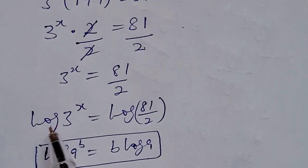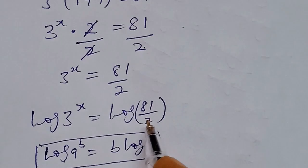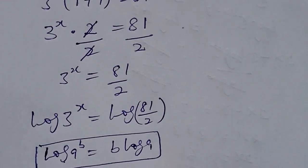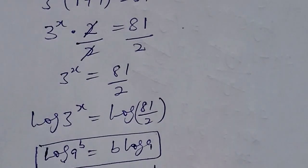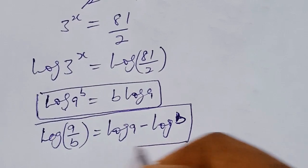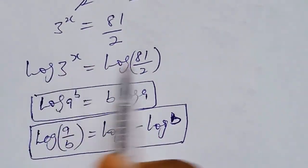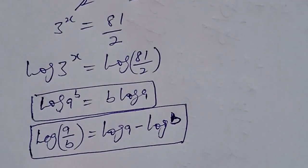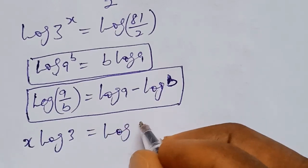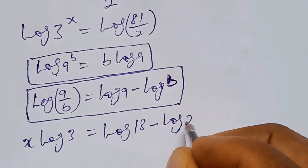We use this identity on the left-hand side, and for the right-hand side we use the log subtraction identity: log of (a/b) equals log a minus log b. This gives us x times log 3 equals log 81 minus log 2.